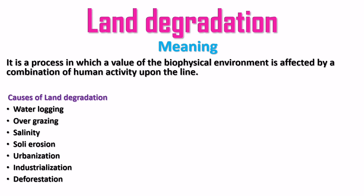Causes of land degradation include water logging, drip irrigation reducing land fertility, overgrazing by cattle, salinity, soil erosion, urbanization, construction, industrialization for industrial purposes, agriculture, and deforestation of forest trees.